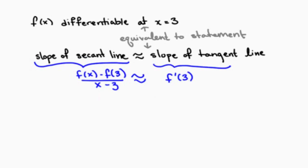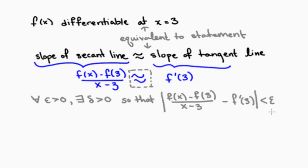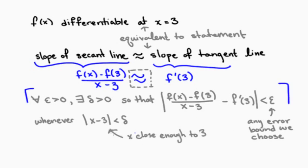In order to see why these statements are equivalent, we need to explain what we mean by approximately equal to. This means that we can make the difference between these two sides as small as any error bound we choose, provided that we choose x close enough to 3. And this is exactly the definition of differentiability at the point 3.